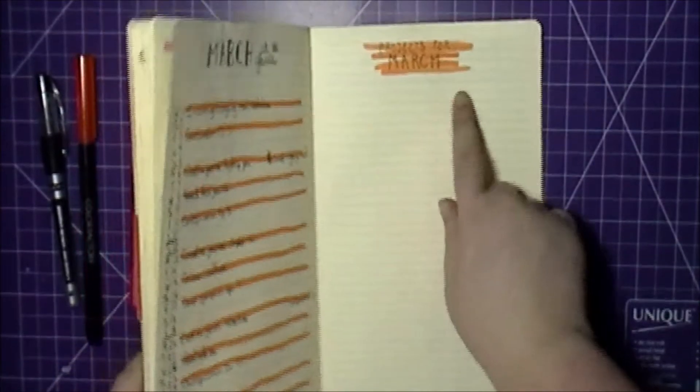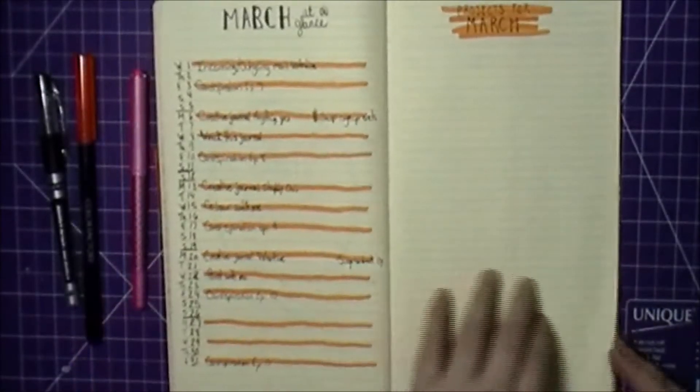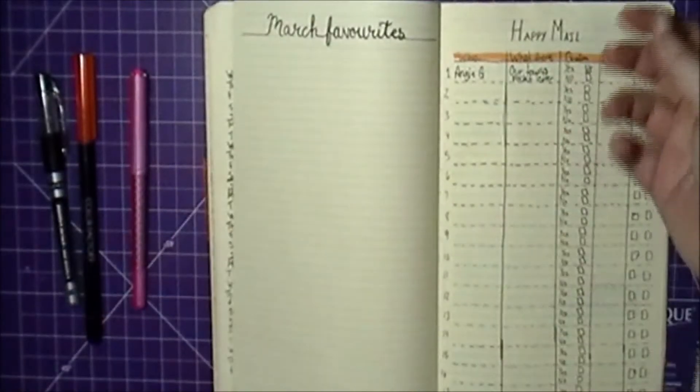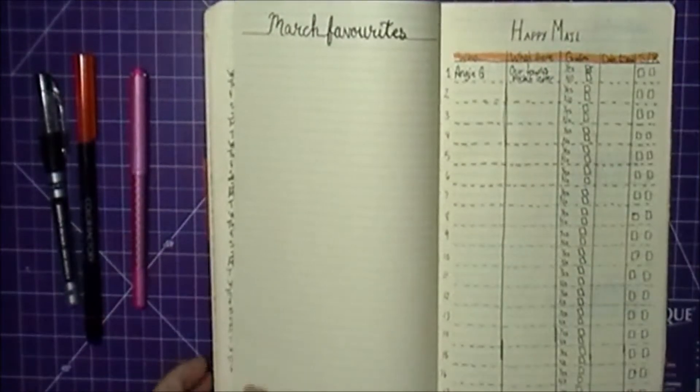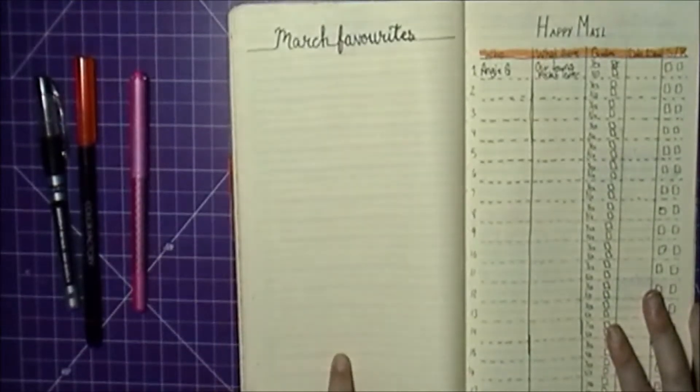Over here I have Projects for March. I've been liking the minimalist type look but still have a little bit of color. I might add some washi tape into this and then have march favorites.